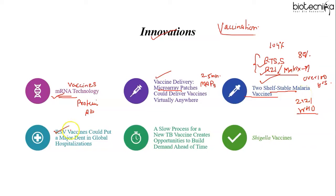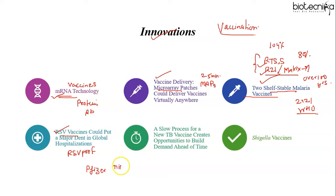Respiratory syncytial virus (RSV) is the most important cause of acute lower respiratory tract infection in young children worldwide and poses a significant threat to very young children and elderly adults in every country. Pfizer's maternal RSV pre-F vaccine, given to pregnant women at 24 to 36 weeks of gestation during phase 3 clinical trials, saw 70 to 80 percent protection against severe disease for infants up to 6 months after birth. Two monoclonal antibodies in late-stage development also show high efficacy against all endpoints, and new products are anticipated to be on the market by end of 2023.